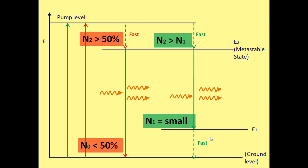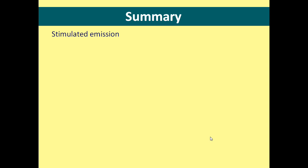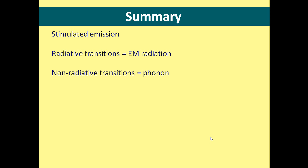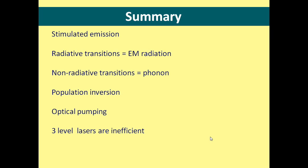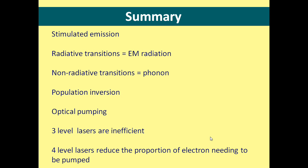And this is why a four-level laser is more efficient than a three-level laser. To summarise: laser light is produced by stimulated emission. Radiative transitions result in the release of energy as electromagnetic radiation, while non-radiative transitions result in the release of energy as phonons. For light input to a laser medium to be amplified, a population inversion is required, and this is achieved by optically pumping atoms to a higher energy state. Three-level pumping systems are inefficient, as more than 50% of the total number of atoms need to be pumped. Four-level pumping systems decrease the number of atoms in the lower energy level of the population inversion, and so reduce the number of atoms needing to be pumped, which increases the laser efficiency.